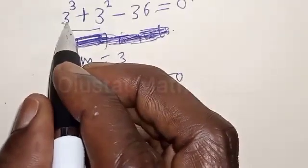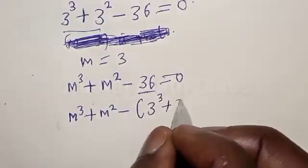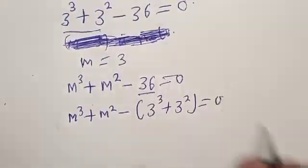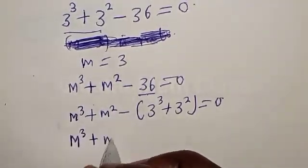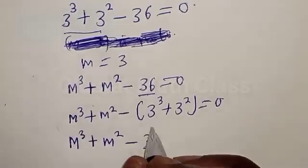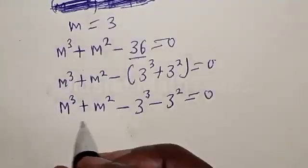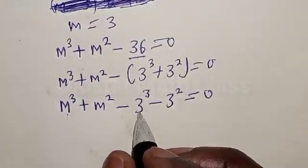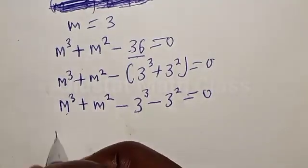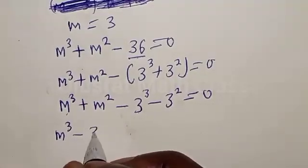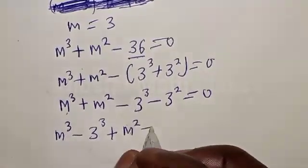Since m equals 3 is a root, we have 3 cubed plus 3 squared equal to zero. Now we write m cubed plus m squared minus 3 cubed minus 3 squared is equal to zero. Comparing terms, we group m cubed minus 3 cubed plus m squared minus 3 squared equal to zero.